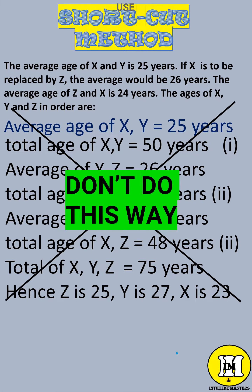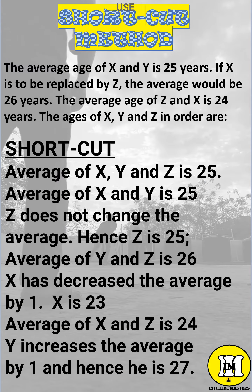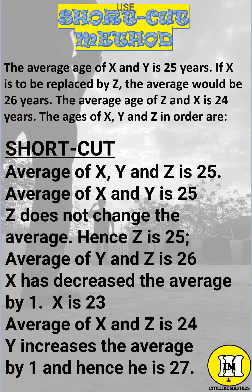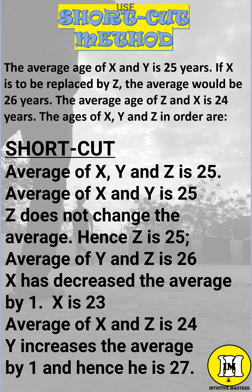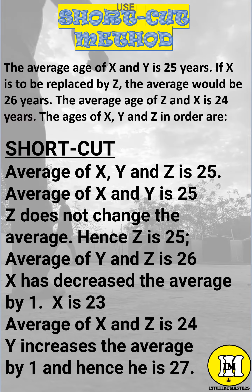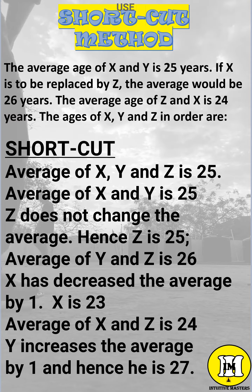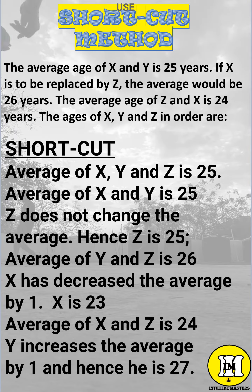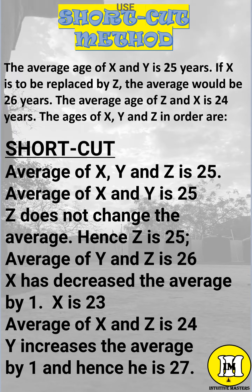Don't follow this method. Average of X, Y, and Z is 25. Average of X and Y is 25 — Z does not change the average. Hence Z is 25.